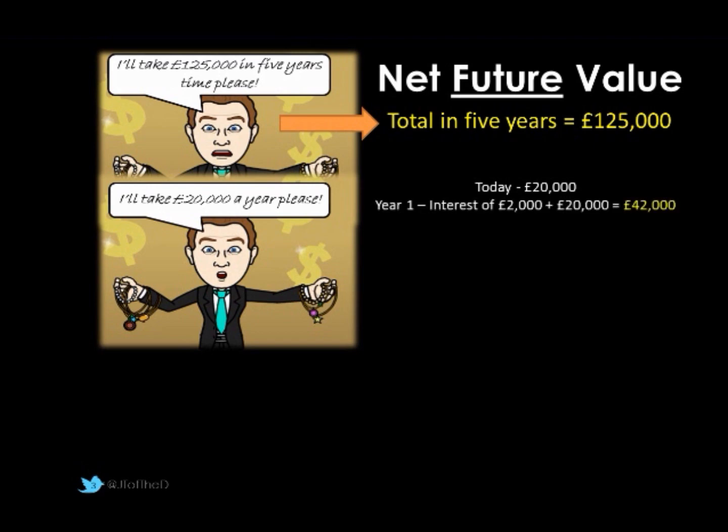One year from now, we'll have earned 10% interest on that. So our £20,000 earns interest of £2,000 on top. We'd also get our second instalment of £20,000. Adding that together — £20,000 plus £2,000 interest plus the second instalment of £20,000 — we'd have £42,000 in our bank account.